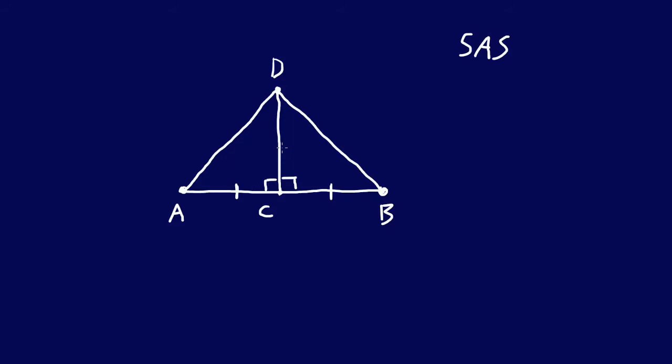So by side, angle, side, we know that these two triangles are congruent. So therefore, triangle ACD is congruent to triangle BCD.